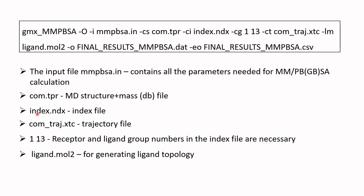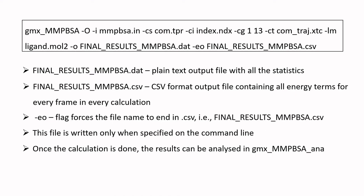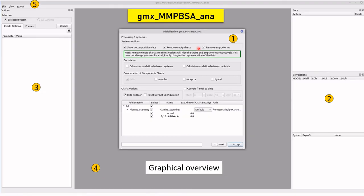In the command line, 1 and 13 are the receptor and ligand group numbers in the index file. The ligand mol2 file is provided for generating ligand topology. The -evo flag forces the output file name to end in a CSV file format, saving results to final_results_mmpbsa.csv. If the -evo flag is not included, results will not be output to this CSV file. Once calculation is done, results can be analyzed using gmx_mmpbsa_ana, the graphical user interface.